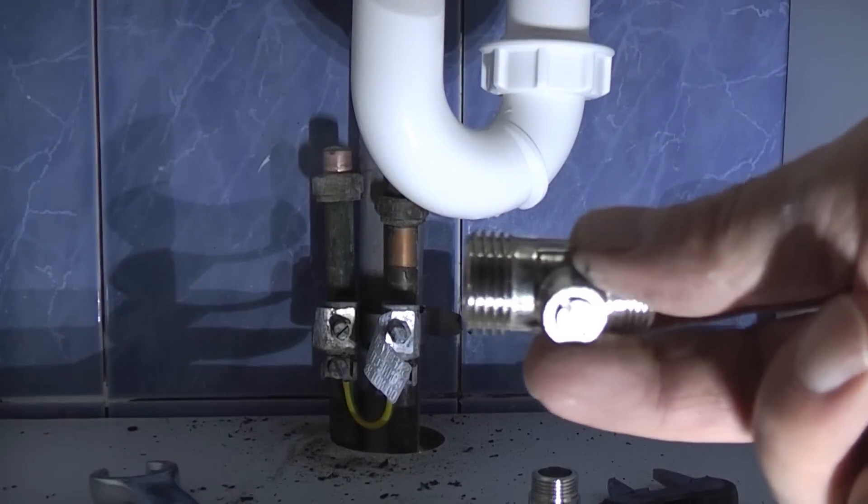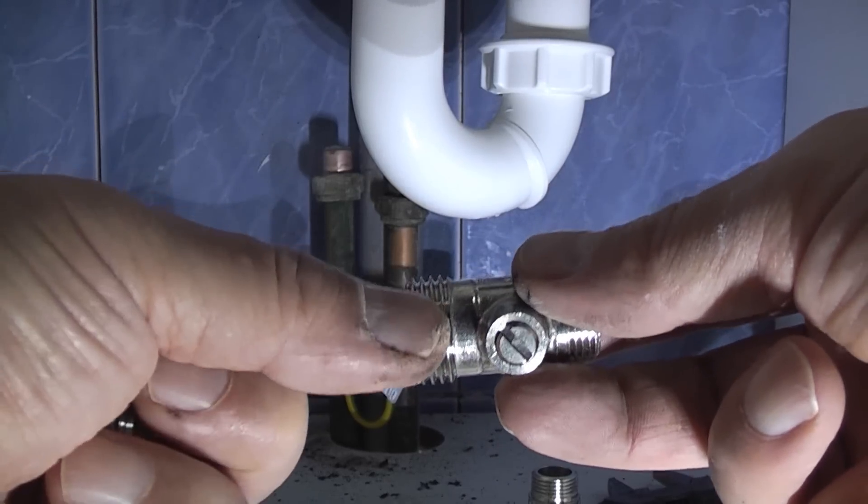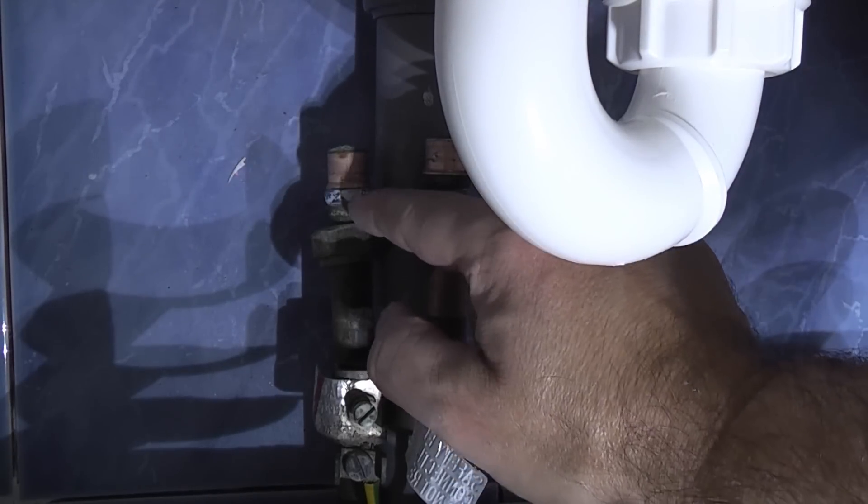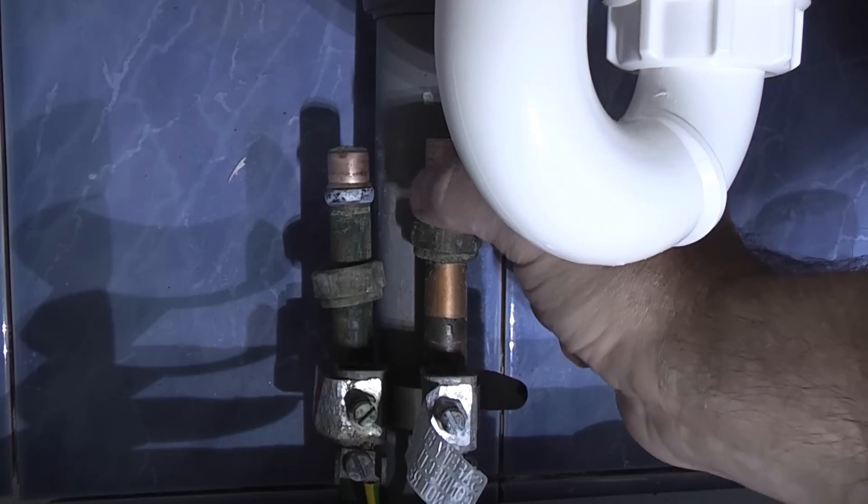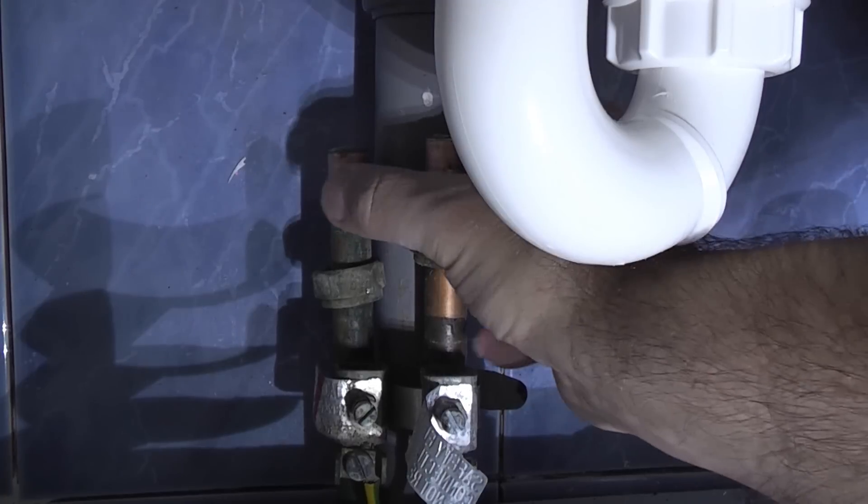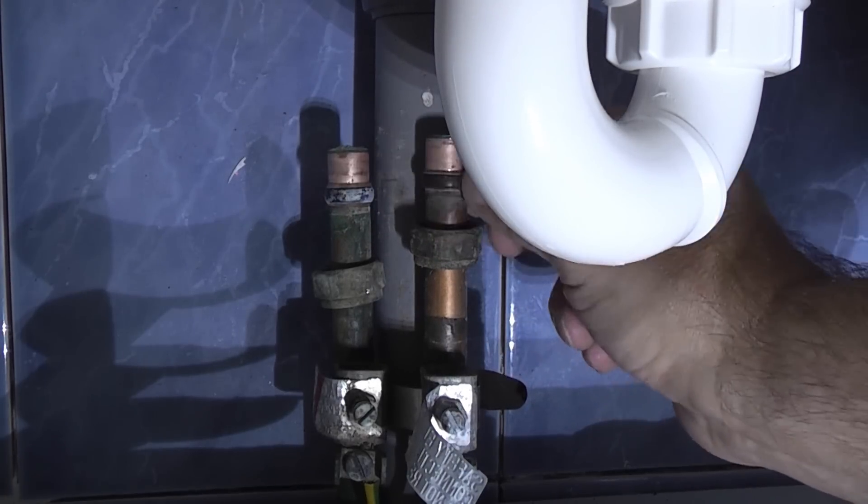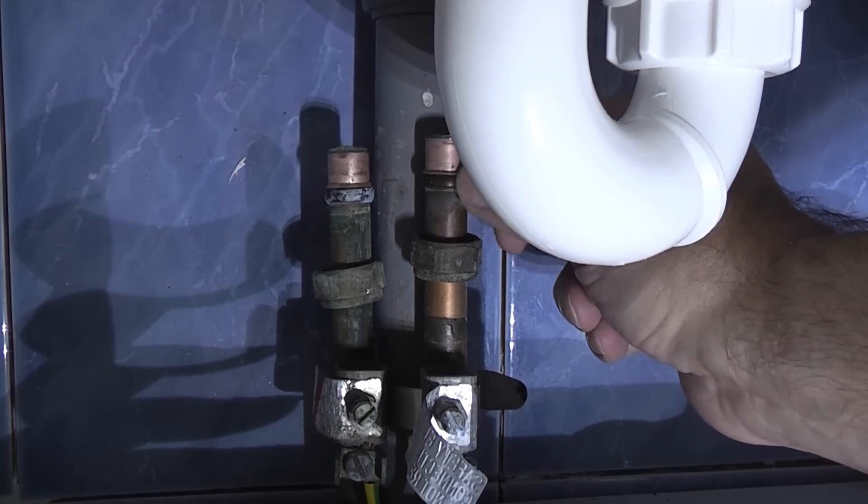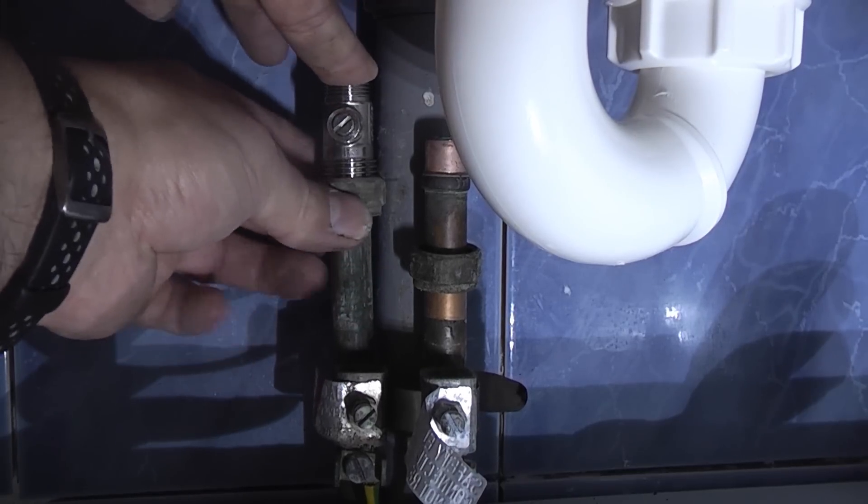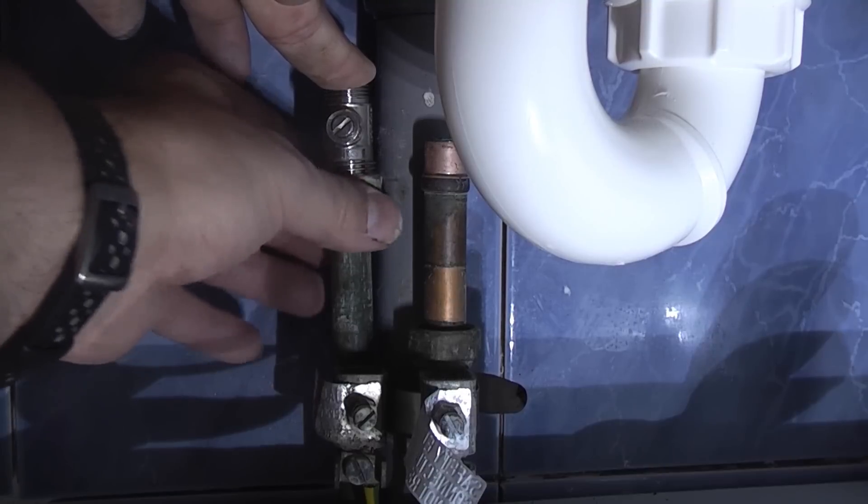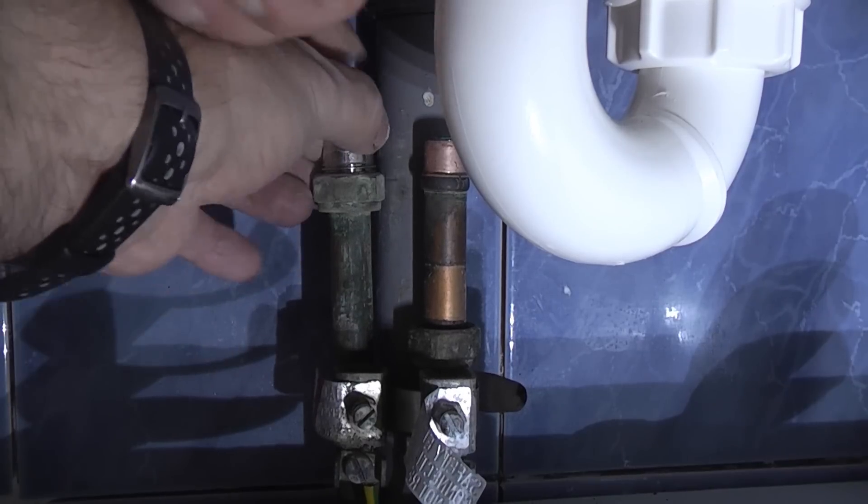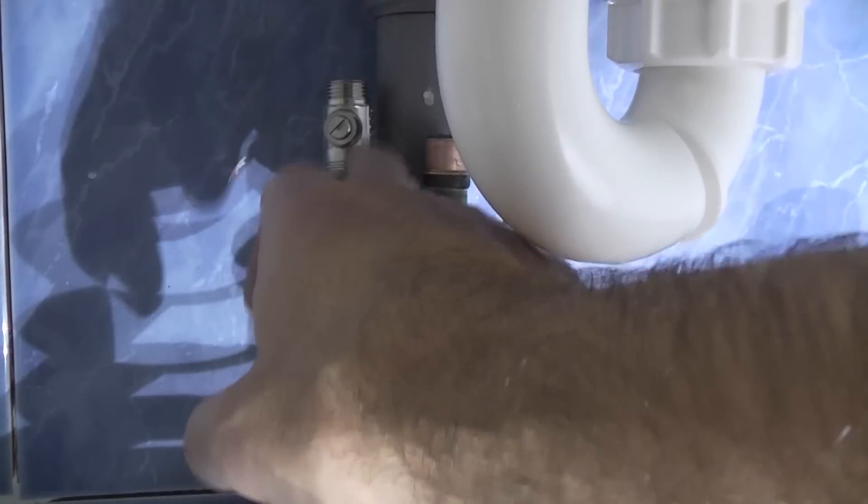That means that we can screw that directly onto the original nut and the existing olive. And if we look at the olives at the back there, they are in pretty good condition. One of them, oh they're actually both brass, which I'm not really keen on. Brass olives aren't as good as copper because they don't compress as much because they're not as ductile. We should just be able to tighten that up and it shouldn't leak. If it does leak we're going to have to put some PTFE tape around the olive.